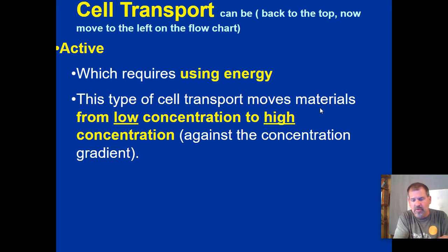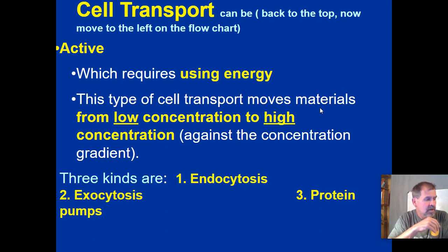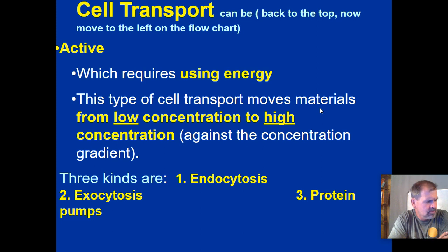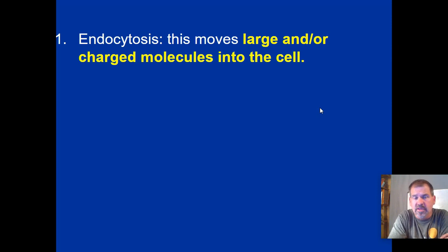Active transport goes from low concentration to high concentration — less crowded to more crowded. The flowchart now branches into three kinds of active transport, numbered one to three from left to right: endocytosis, exocytosis, and protein pumps. Endocytosis is on the far left and moves large or charged molecules into the cell — 'endo' means in.